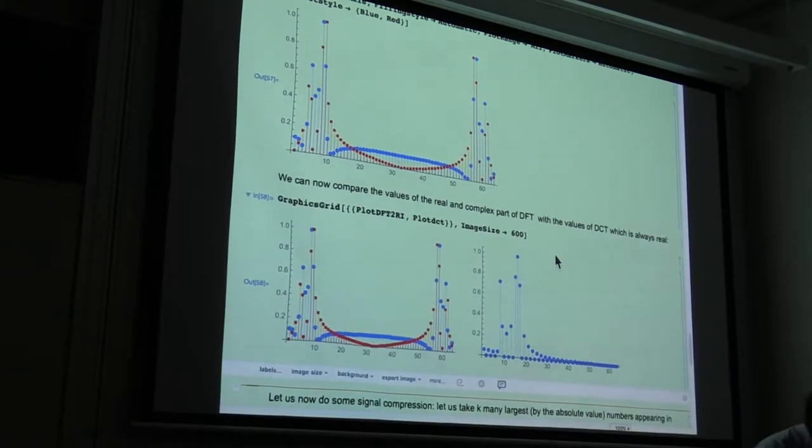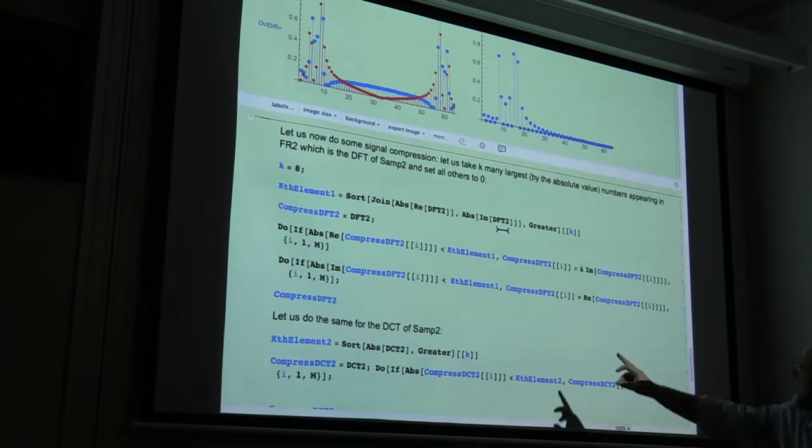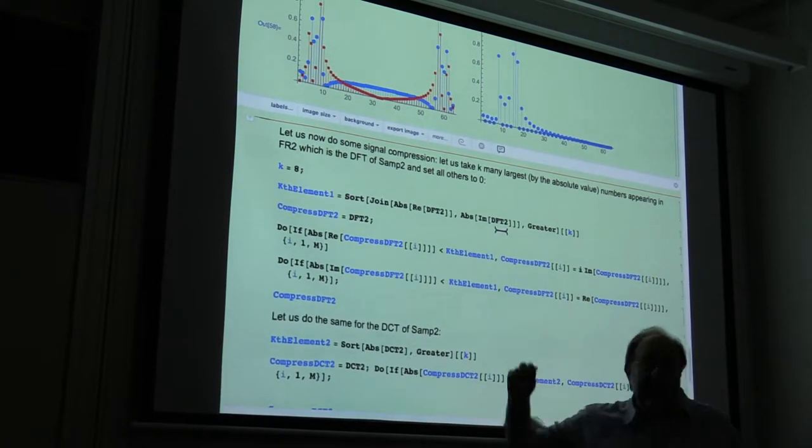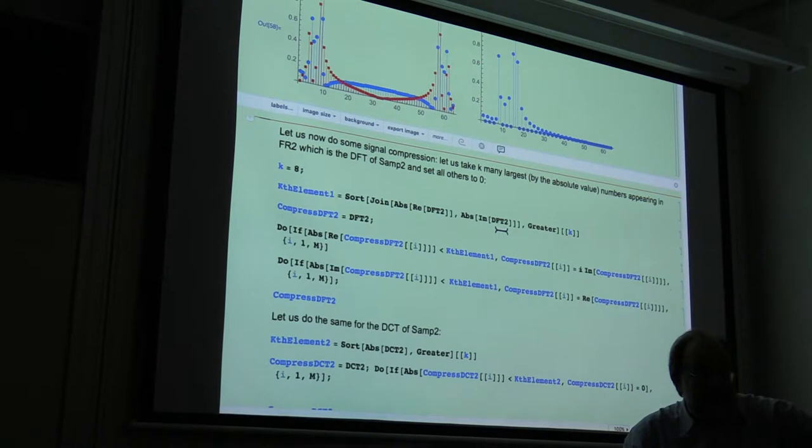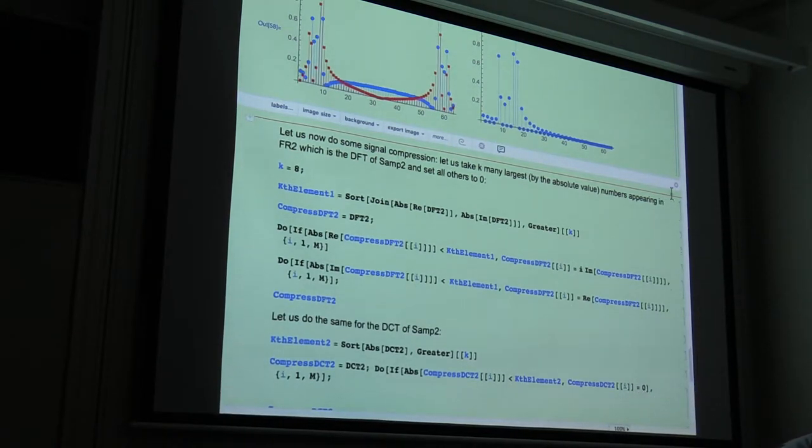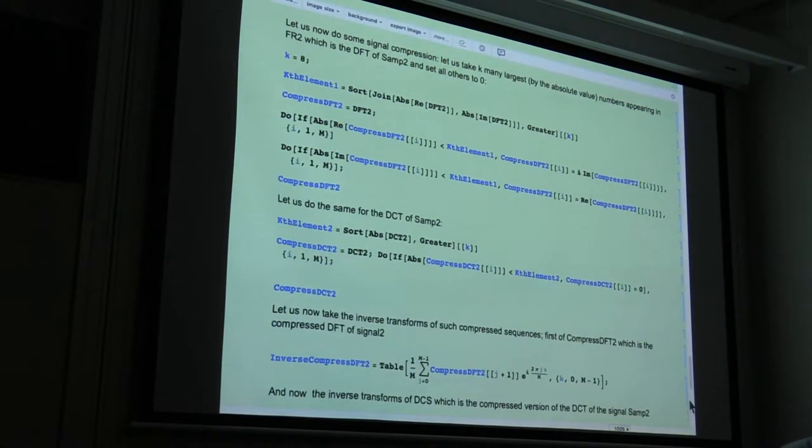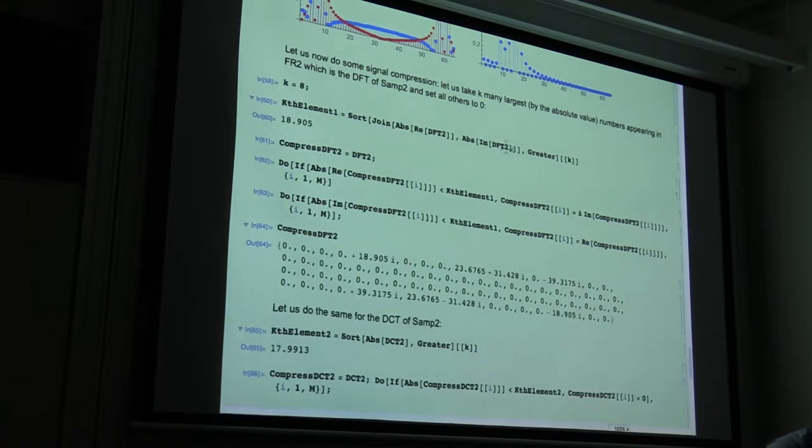And let's do and compare it. So what we are doing here, we decide to keep only eight largest coefficients, both in the discrete Fourier transform and in discrete cosine transform. So you just select, this is simply, you can read this, this simply selects eight largest numbers.